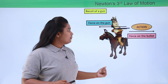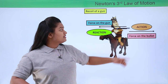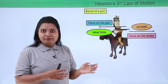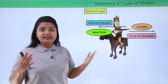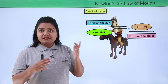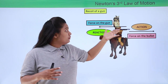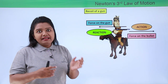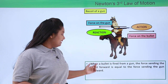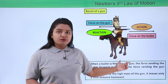The action force is the force on the bullet, and in reaction we have the force onto the gun. These two forces are equal in magnitude. However, the bullet moves with a very high speed while the gun moves backward only a very little distance. This happens because of the difference in the masses of the bullet and the gun — the gun is more massive, so the equal force causes it to move only a very little distance backward.